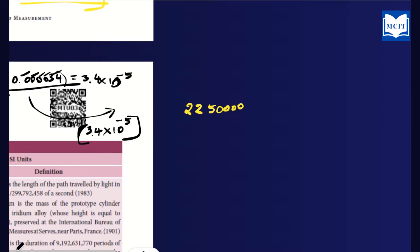Similarly, for a large number like 22,50,000 — we count the digits from the decimal point: 1, 2, 3, 4, 5. So 22,50,000 is represented as 22.5 into 10 power 5.